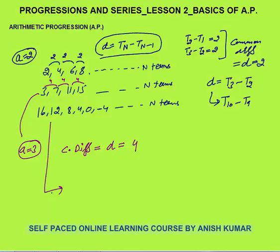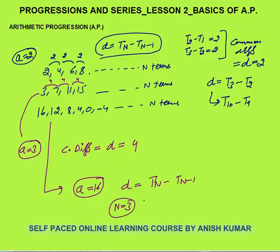The third progression is 16, 12, 8, 4, 0, minus 4. In this case, the first term A is 16. The common difference D is not 4 — very important. D is Tn minus T(n-1). Second term minus first term: 12 minus 16, the difference is minus 4. This common difference is minus 4, not 4. Again, 8 minus 12 is minus 4. So that is the meaning of AP.